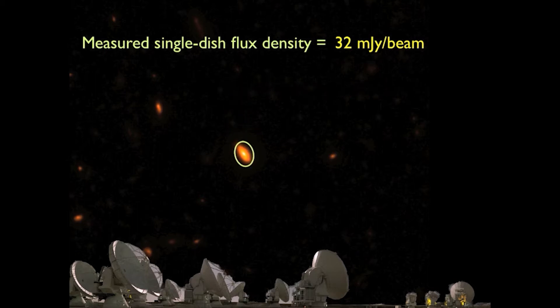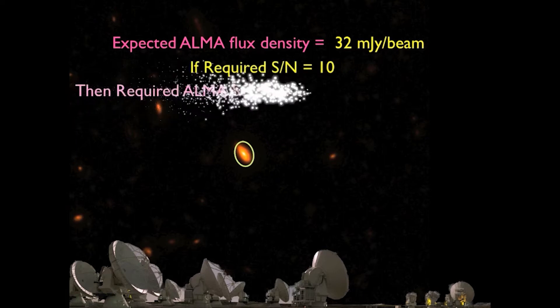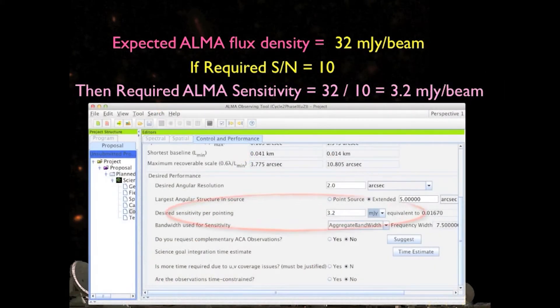If the source is small compared to the ALMA beam, for example, then all of the flux will fit into the beam. You're basically done. You now know the expected flux density for an ALMA observation, and you just need to decide on the signal-to-noise ratio you need.